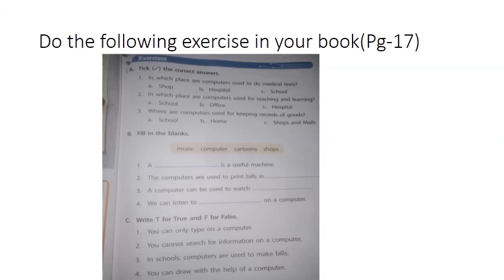सबसे पहले आपने ये question read करना है: 'In which place computers are used to do medical tests?' इसमें three options दिए हैं — A, B, C — इनमें से जो option ठीक है उस पे आपने tick लगाना है. फिर second question read करना है, उसका जो option ठीक है उस पे tick लगाना है, ऐसे third question. फिर B part is fill in the blanks — ये आपको hints दिए हैं.